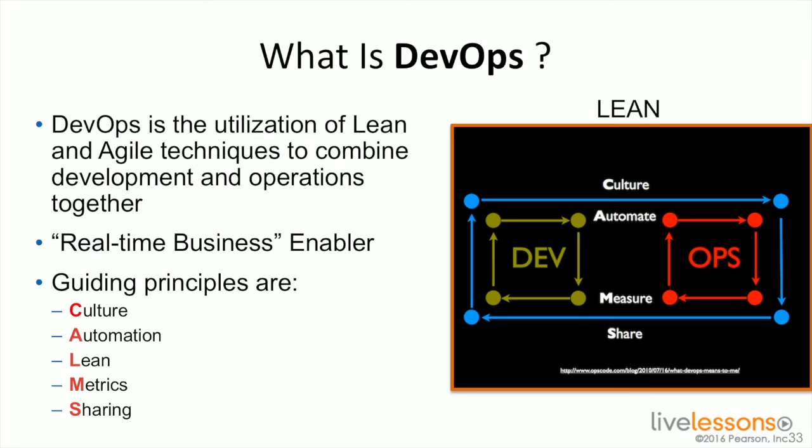So what is DevOps? DevOps is all about utilizing lean concepts — lean is all about getting waste out of the organization, minimizing the amount of busy work. It leverages lean and agile techniques to combine development and operations together, so they really have a shared fate type scenario.